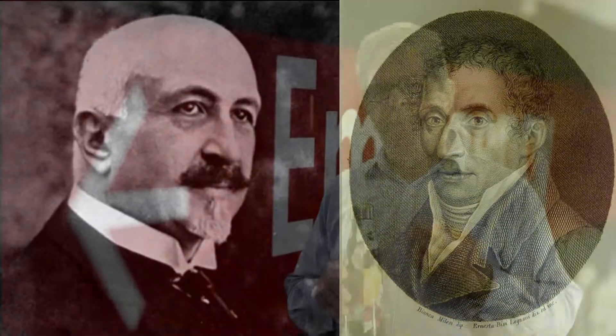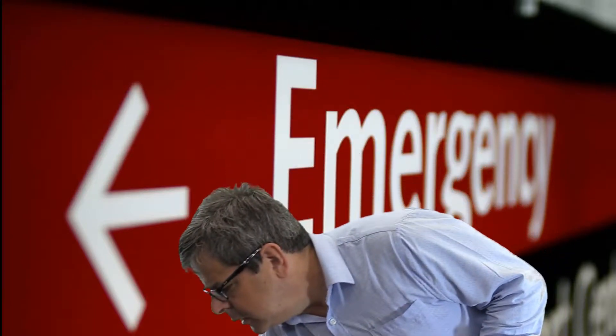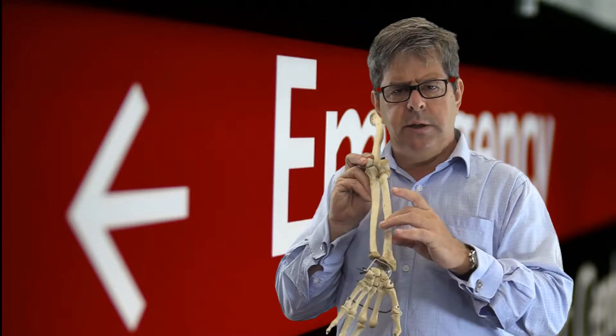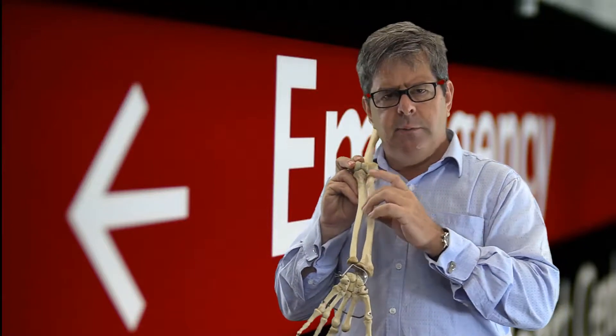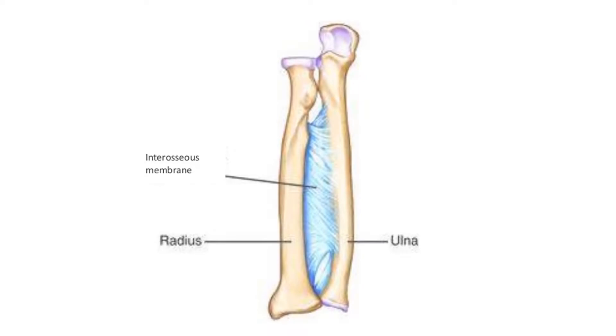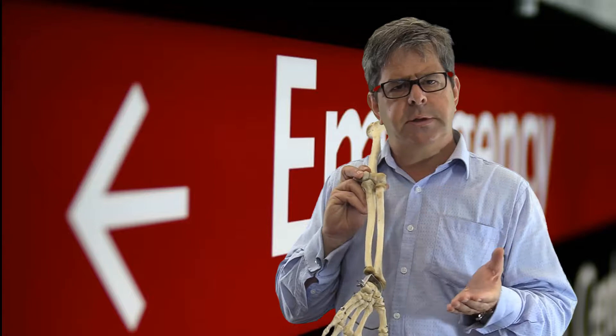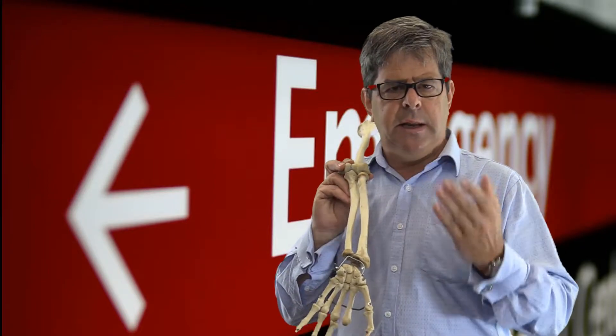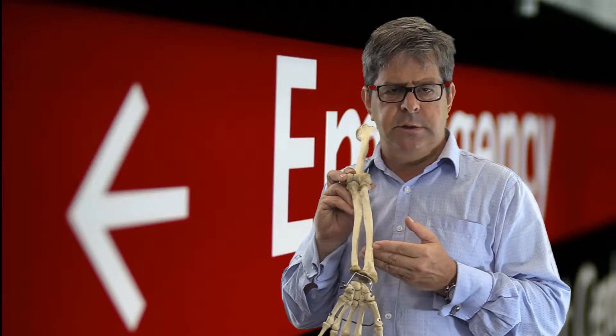These are important injuries because occasionally they're either missed or delayed in their diagnosis in the emergency department. Before we start, there's one important principle: using this skeleton, you can see the ulna and the radius. These are bound together by a very tight interosseous membrane. If you fracture one of these bones with shortening, the other has to either fracture or dislocate — and this is the principle you'll see in both the Galeazzi and the Monteggia fracture-dislocations.